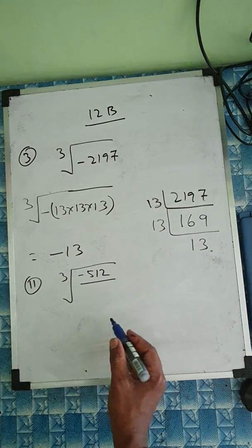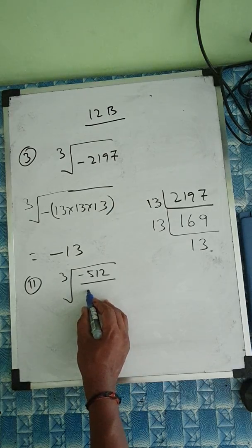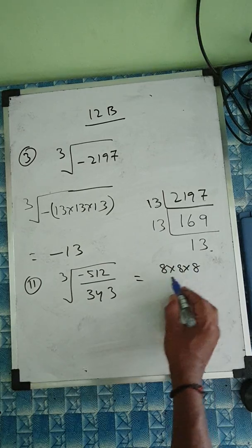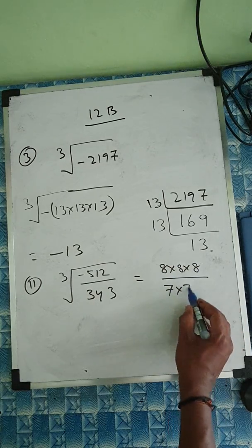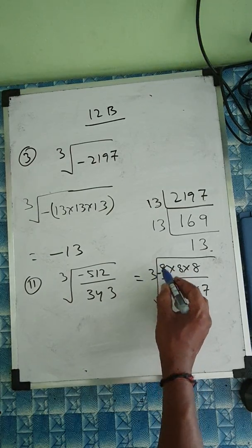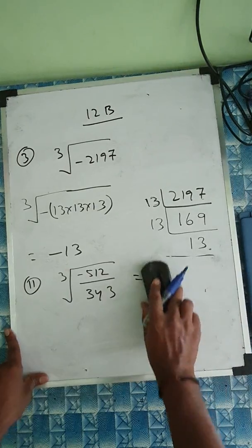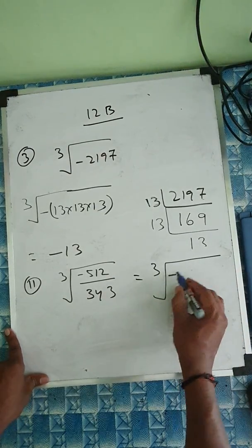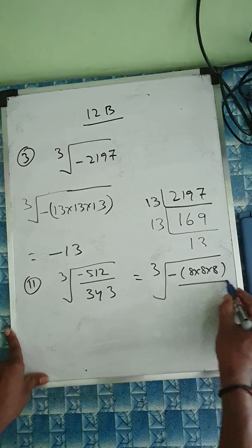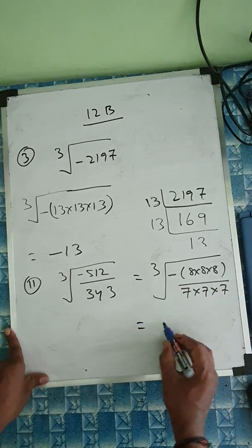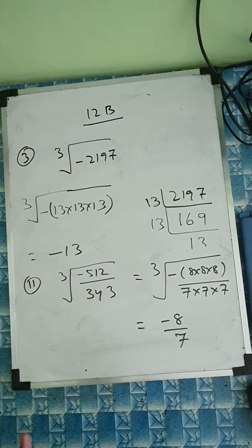Some cube numbers are useful to memorize — we already know 512 is 8 cubed and 343 is 7 cubed. For the cube root of minus 512 over 343: we write it as minus (8 × 8 × 8) over (7 × 7 × 7), giving us minus 8 over 7.